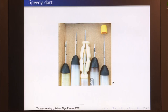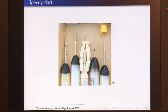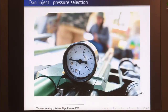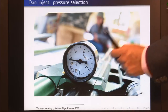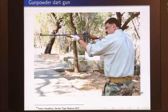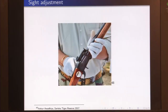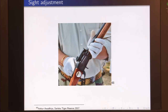Similar needle types are available for PD darts, with an additional attachment for quick needle release. When using darts in a gun, the amount of pressure determines the distance the dart travels. A barometer at the end of the gun adjusts the pressure, controlling the dart's flight path and distance.